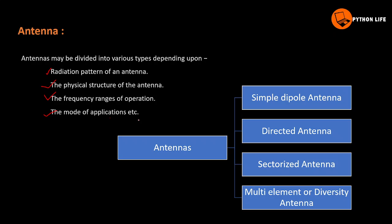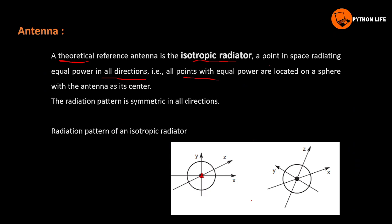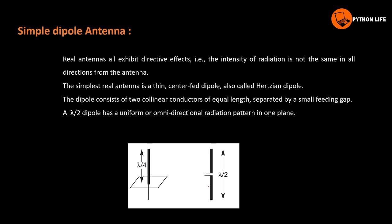The types of antennas include: Simple Dipole Antenna, Directed Antenna, Sectorized Antenna, and Multi-Element or Diversity Antenna — these are 4 types. The isotropic radiator is omnidirectional; the same applies to the Simple Dipole Antenna.